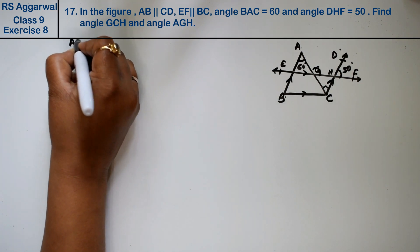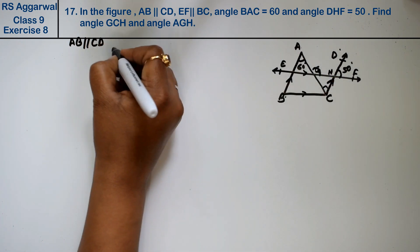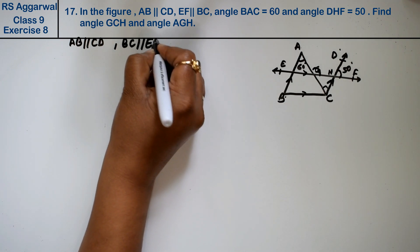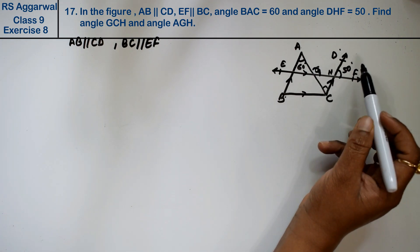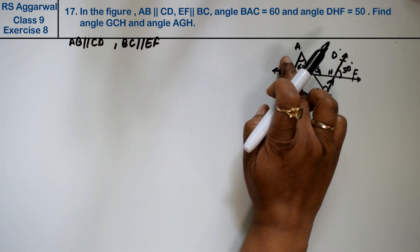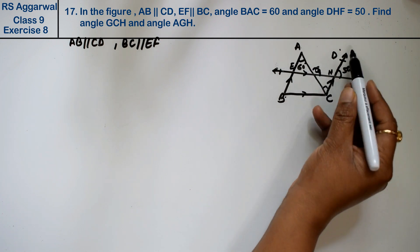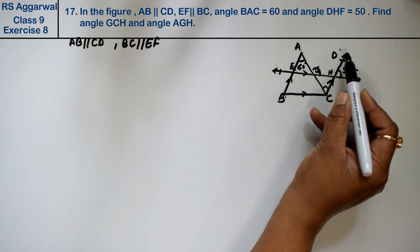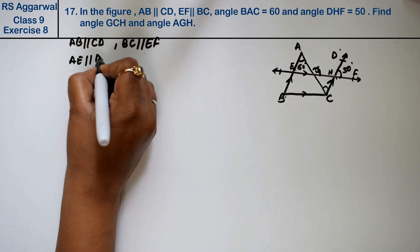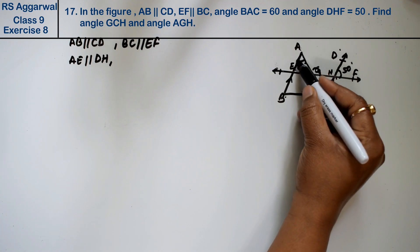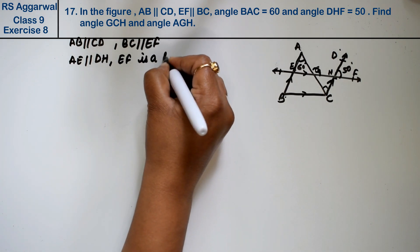We know AB is parallel to CD, and BC is parallel to EF. Since AB is parallel to CD and EF is parallel to BC, therefore AE is also parallel to DH. EF acts as a transversal here.